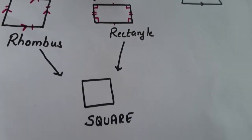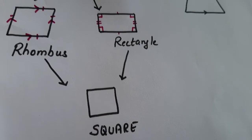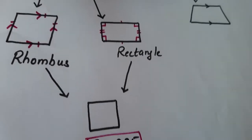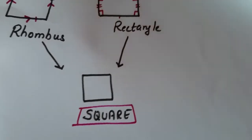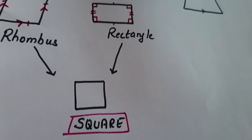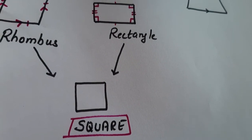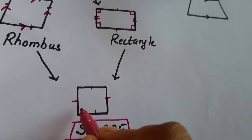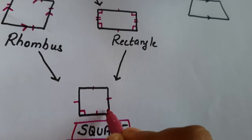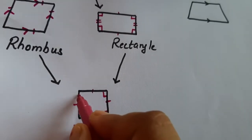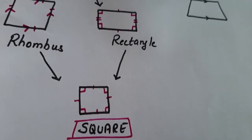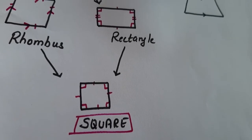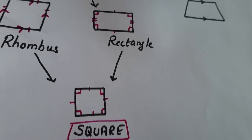Next is the special case of rhombus and rectangle — that is a square. In a square, all the sides are equal and parallel, plus it makes 90-degree angles. So all the angles are 90 degrees and all the sides are equal and parallel.